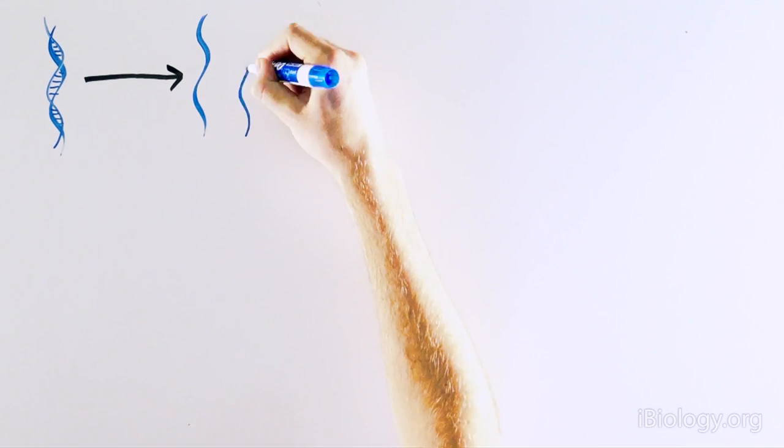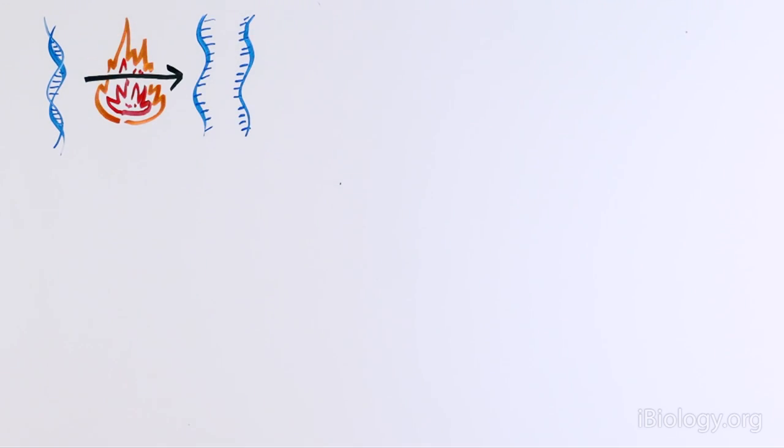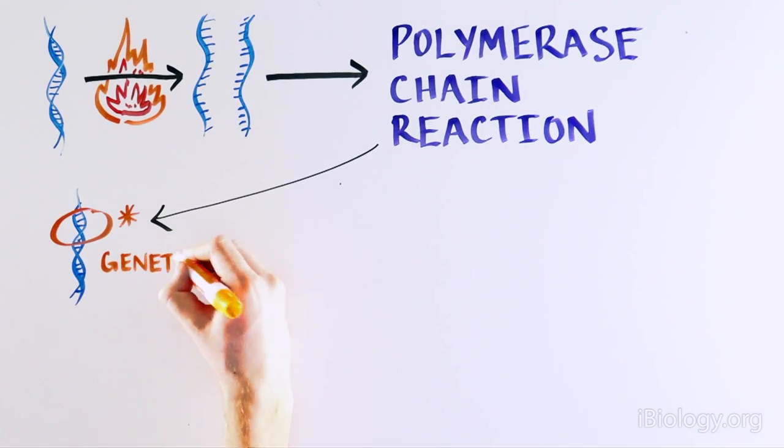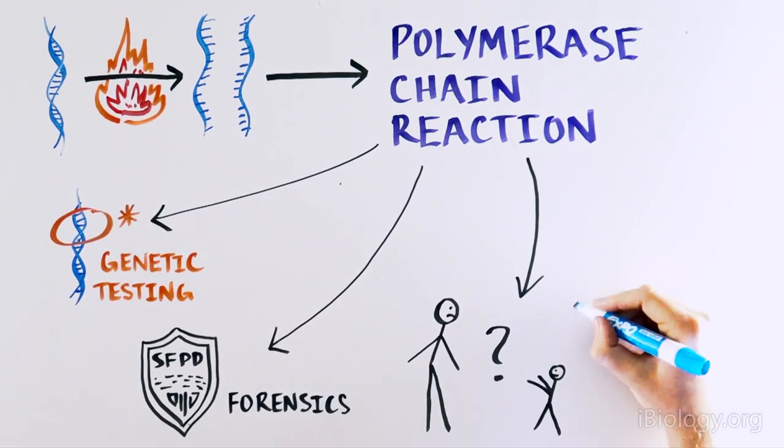They also went on to show that heating DNA can cause the DNA strands to separate. This simple concept is the basis for an important technique we frequently use in the laboratory called polymerase chain reaction, which is used in genetic testing, forensics, and paternity tests.